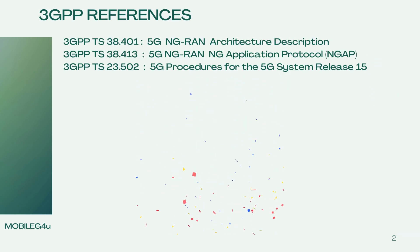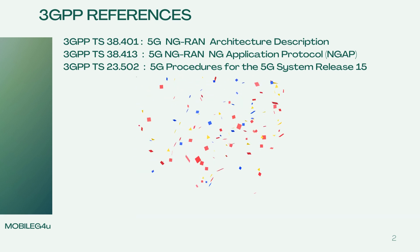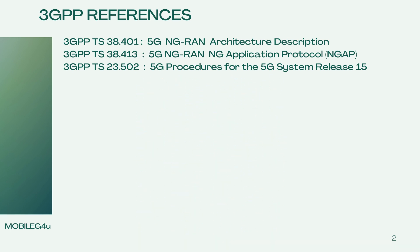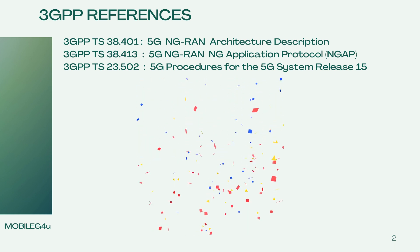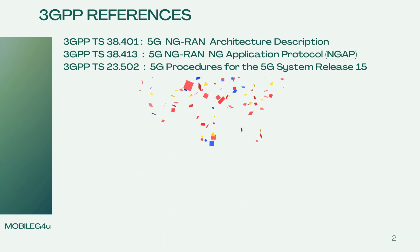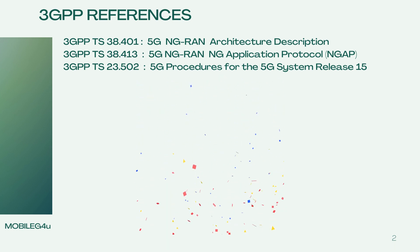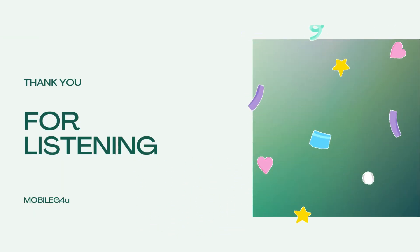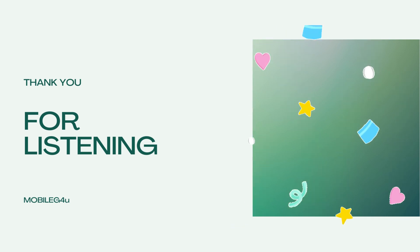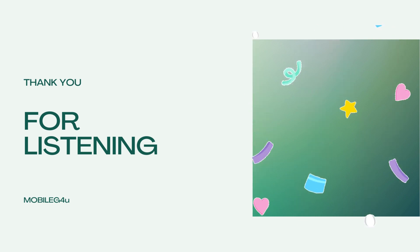These are the references used: 3GPP specifications 38.401 for NG-RAN architecture, 38.413 for the NGAP application protocol, and 23.502 for 5G procedures. Thanks for watching this video. If you are finding these videos helpful, please subscribe to the channel and share it with your friends.